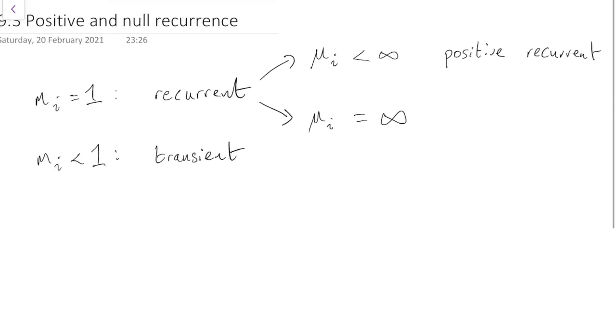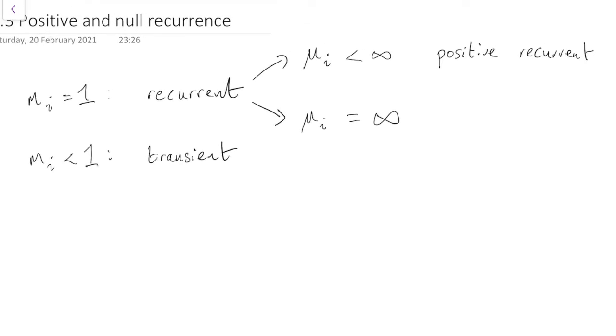So, finite expected return time, positive recurrent. Infinite expected return time, null recurrent. Null recurrent states do come back again, but they can take an extremely long time to get back again, because that expectation is infinite.